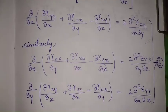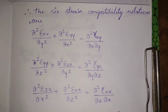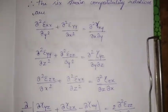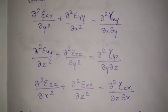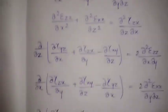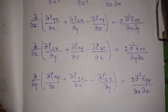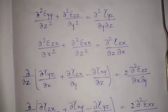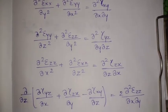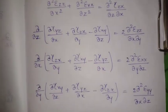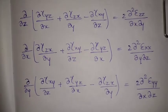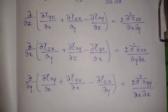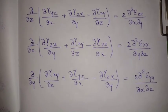Writing all six together: the first three strain compatibility relations come from the first group, and the second three from the second group. These six equations combined are called the Saint-Venant compatibility equations. That is it for this video — please like, share, comment, and subscribe to my channel. Thank you for watching.